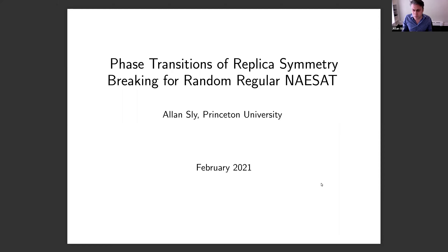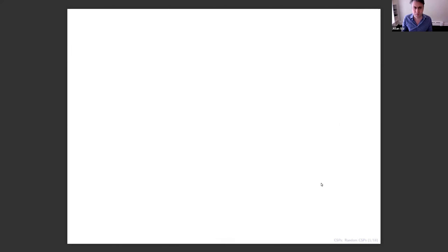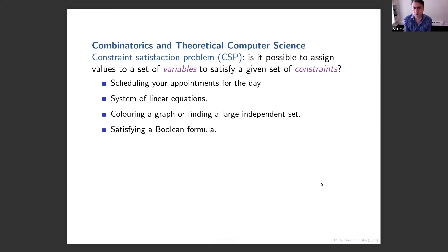Let me tell you what constraint satisfaction problems are. It's a term from combinatorics and theoretical computer science, and it means exactly what it sounds like: you have some variables and you want them to satisfy a collection of constraints. Imagine satisfying a system of equations, coloring a graph, or satisfying a Boolean formula. These play an important role in complexity theory.